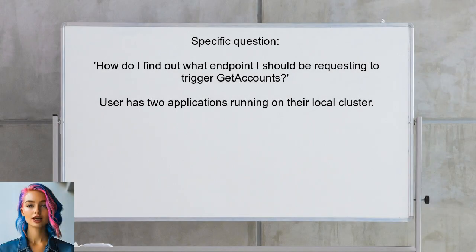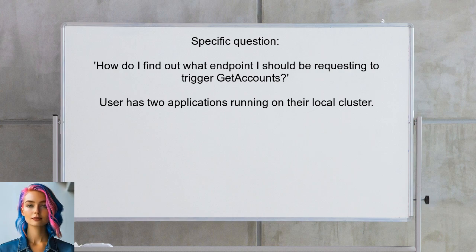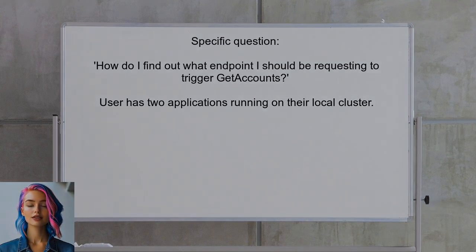Let's dive into the specific question at hand. One user asked: how do I find out what endpoint I should be requesting in order to trigger get accounts? They have two applications running on their local cluster and they need clarity on the endpoint setup.